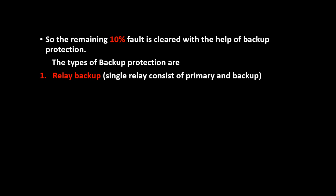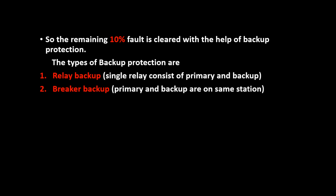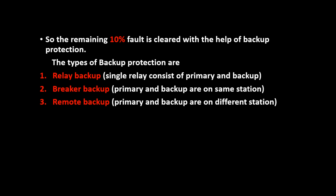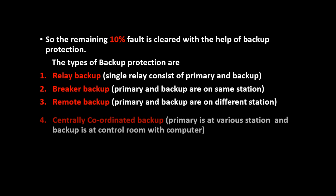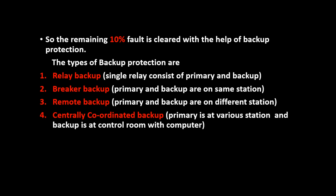The types of backup protection are: Relay backup, where a single relay consists of both primary and backup. Breaker backup, where primary and backup are on the same station. Remote backup, where primary and backup are on different stations. Centrally coordinated backup, where primary is at various stations and backup is at a control room with a computer.